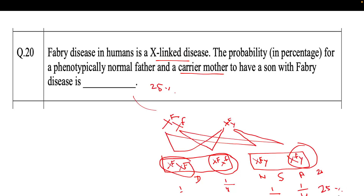If the question asks how many offspring are normal, the answer is 50% — two out of four offspring are normal (normal daughter and normal son). Only 25% of sons are affected. The carrier daughter (heterozygous condition) is not considered affected.